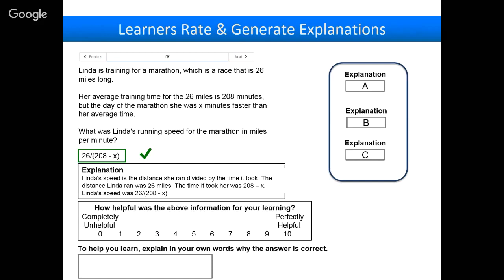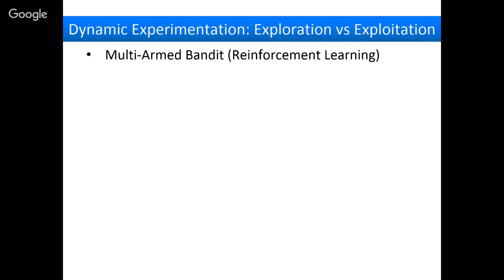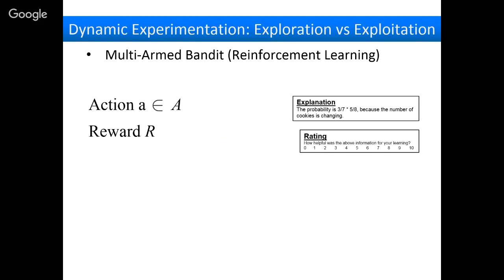How do we actually run this dynamic experiment to figure out which explanations learners find helpful? This ties back to the multi-arm bandit framework. You have a set of actions — the explanations you give someone — and you're trying to optimize a reward. In this case the reward is people's rating of how helpful it was. I also looked at optimizing for accuracy on the next problem, but that wasn't as good a reward because it's very noisy and depends on many things besides the explanation, like prior knowledge.